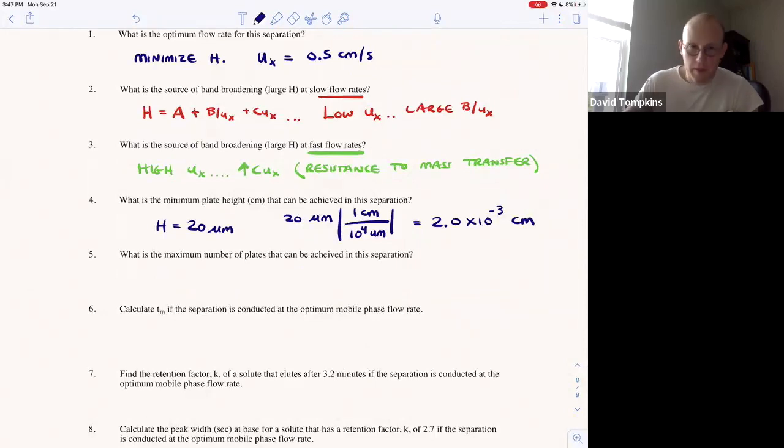So the maximum number of plates is going to be related to the plate height and the length of the column, right? Recall the length of the column is the number of plates multiplied by the plate height.